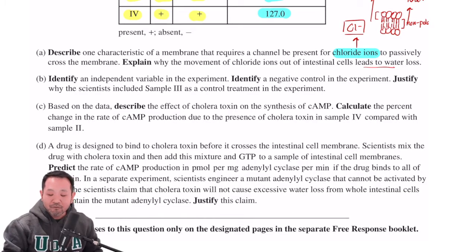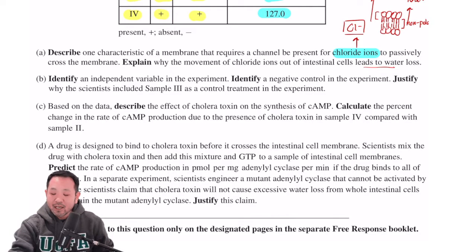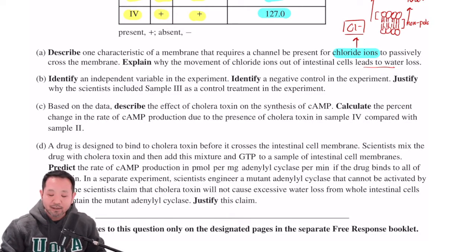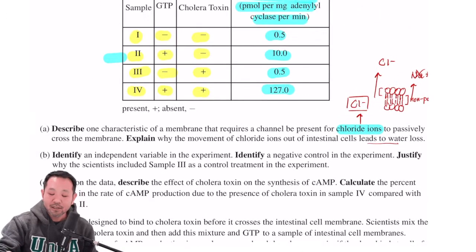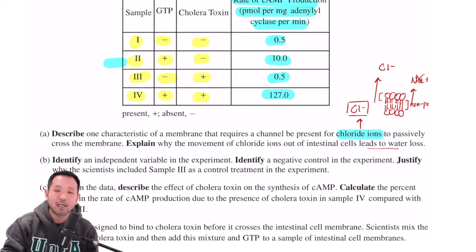It says, identify an independent variable in the experiment. Identify negative control. Justify why the scientists included sample 3 as a control treatment in the experiment. So this is very typical of AP biology. If they give you real data to work with, like what we see here, then they might ask you to identify dependent, independent, negative, positive controls, and so on.